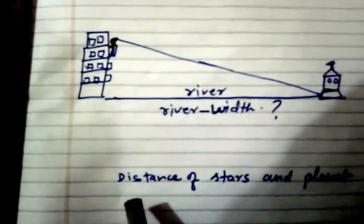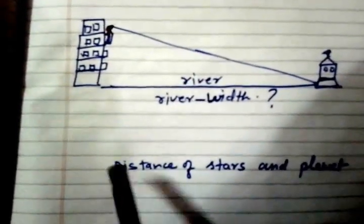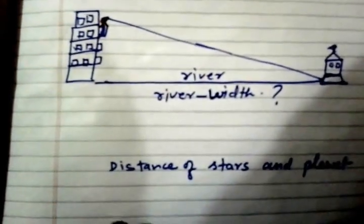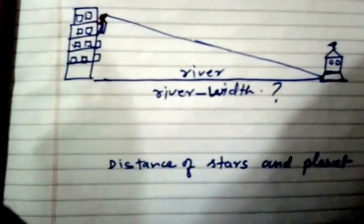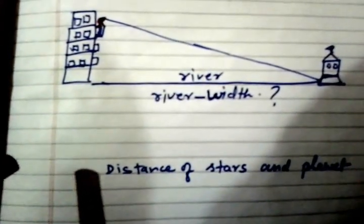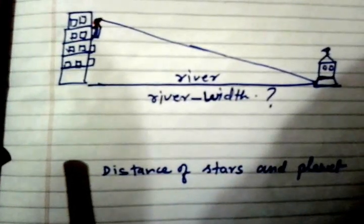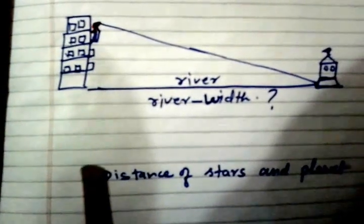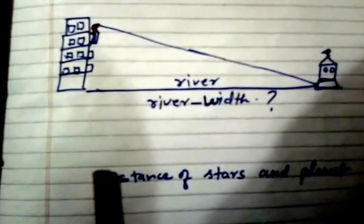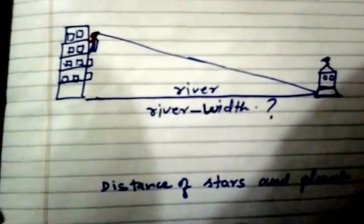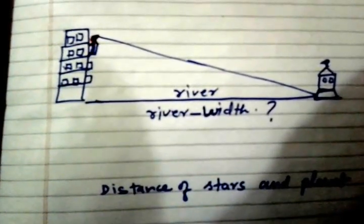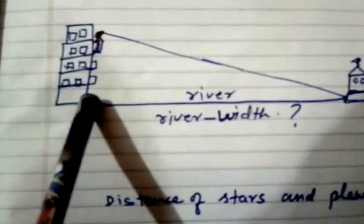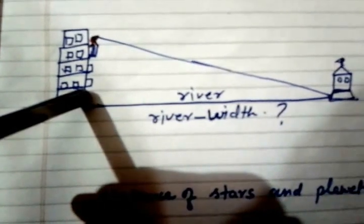In earlier times, the scientists used to measure the distance of stars and planets by trigonometric. In trigonometric, the word tri is derived from Greek words: tri (T-R-I) meaning three, gon meaning side, and metron meaning measures. So in this way, trigonometry forms. Trigonometry is the study of relationship between the sides and angles of a triangle.